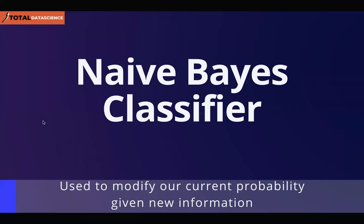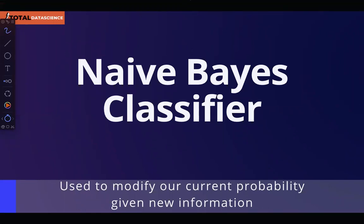If you remember the stats class, we talked about the Naive Bayes theorem where we did some calculations, and we also talked about independent events and came up with some formula. Let me bring my pen on so I can write on the screen. We talked about a formula like this one.